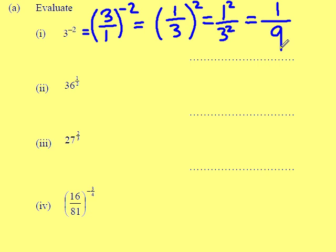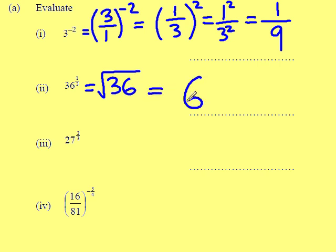The final answer is 1 over 9. 36 to the half just means square root of 36 — we all know that is 6. 27 to the power of 2 thirds: I've got to divide this into two parts, so that's 27 to the power of 1 third, all squared.